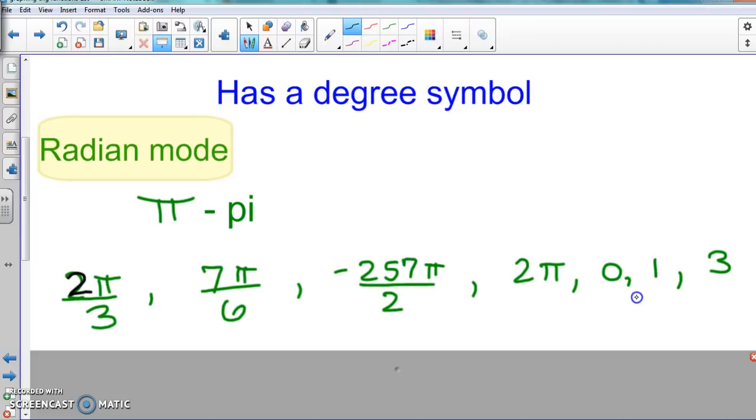Now, with this, if there is not a degree symbol, it is understood to be a radian. So if you look at 0, 1, and 3, they don't have a degree symbol, so they're considered to be radian mode.